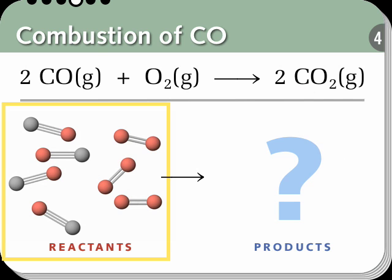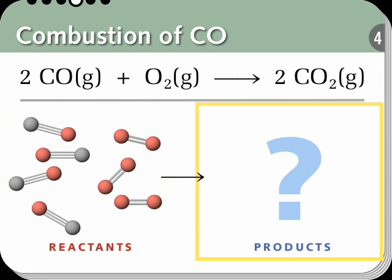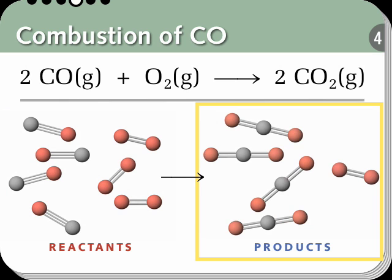Now look at the box on the left — the reactants. There are four molecules of CO and three molecules of oxygen. Now look at the box on the right. How many CO2 molecules were formed in the reaction? There are four. One molecule of oxygen remains. The answer is that CO is the limiting reactant. Two molecules of CO require one of oxygen, so the four molecules of CO that we began with require two molecules of oxygen. We had three to begin with, and so one remains.